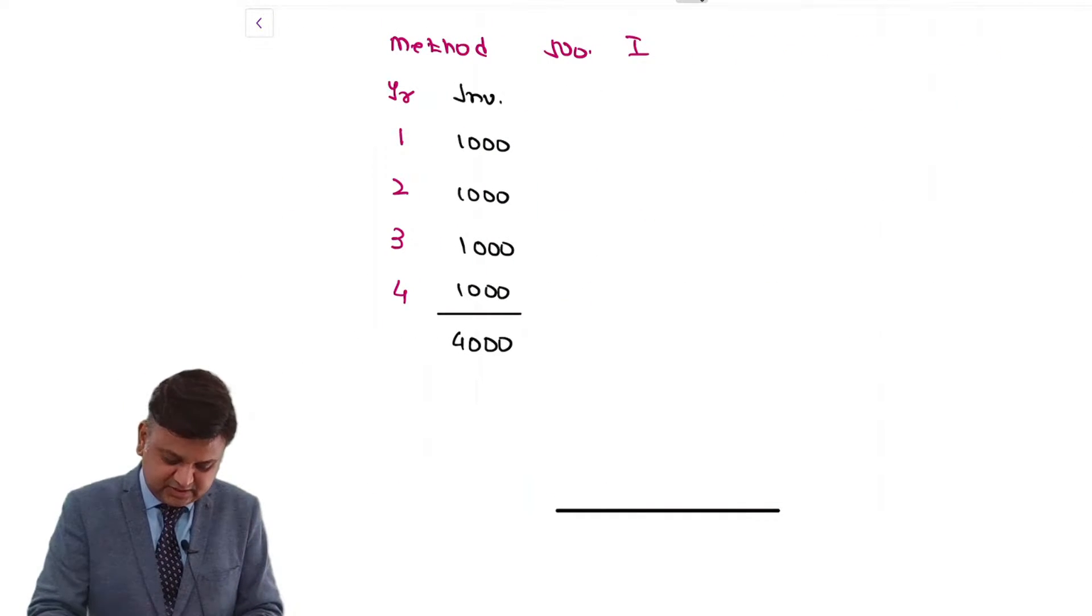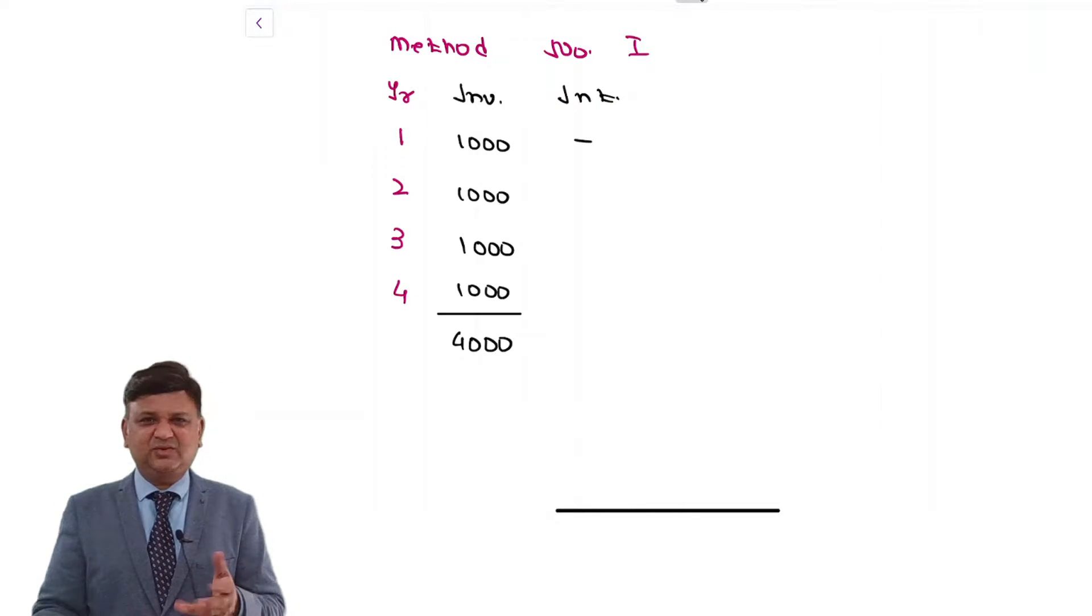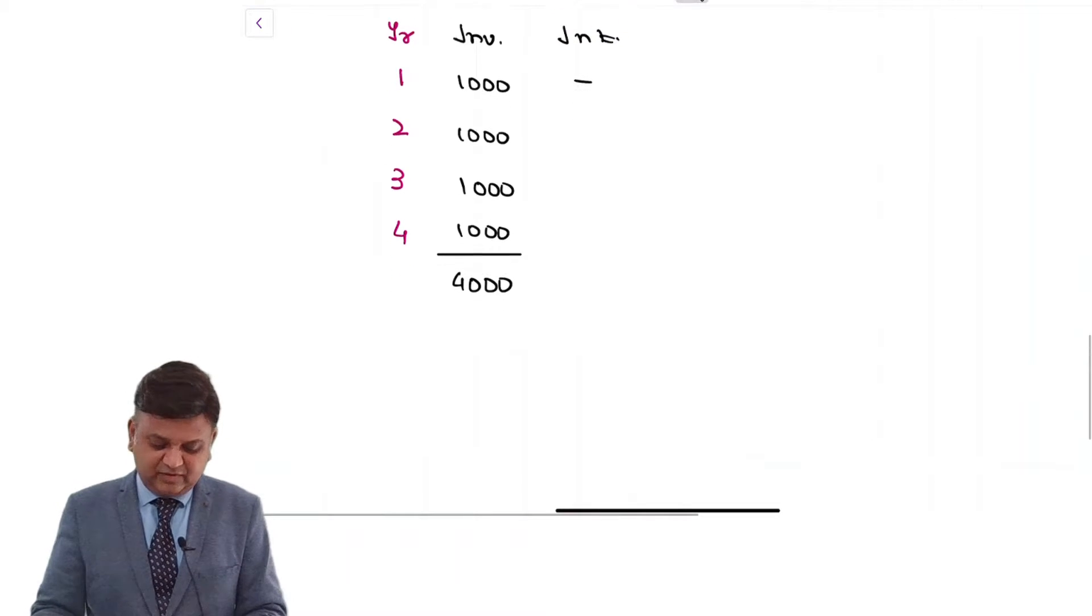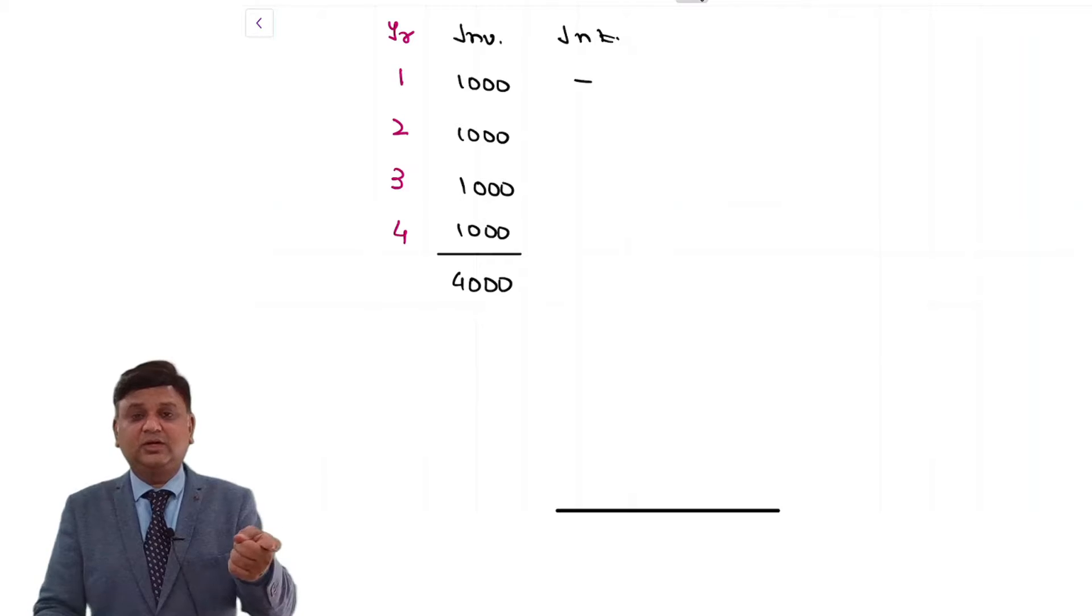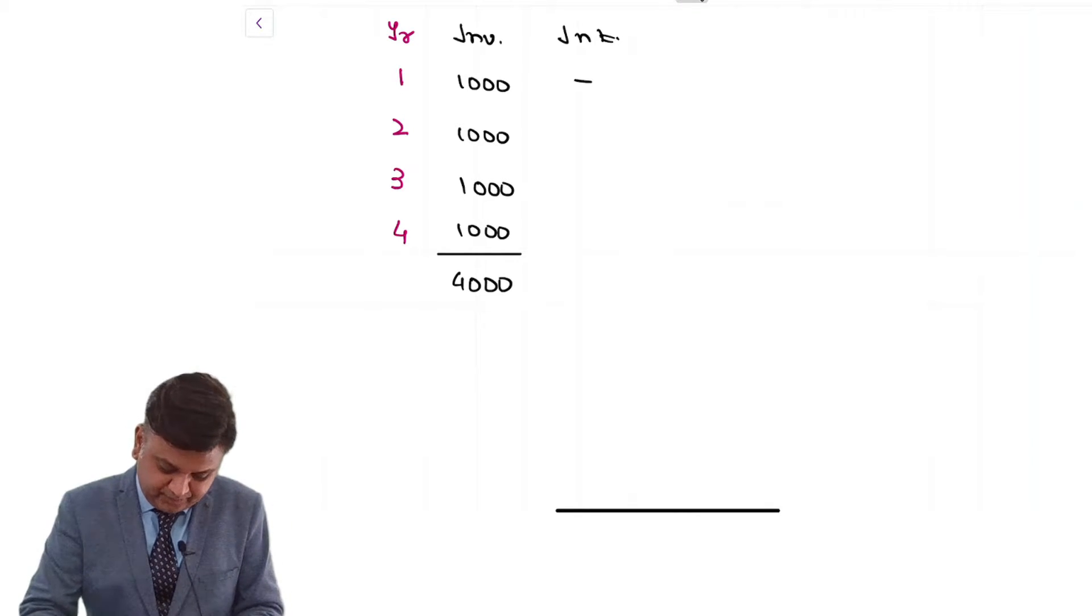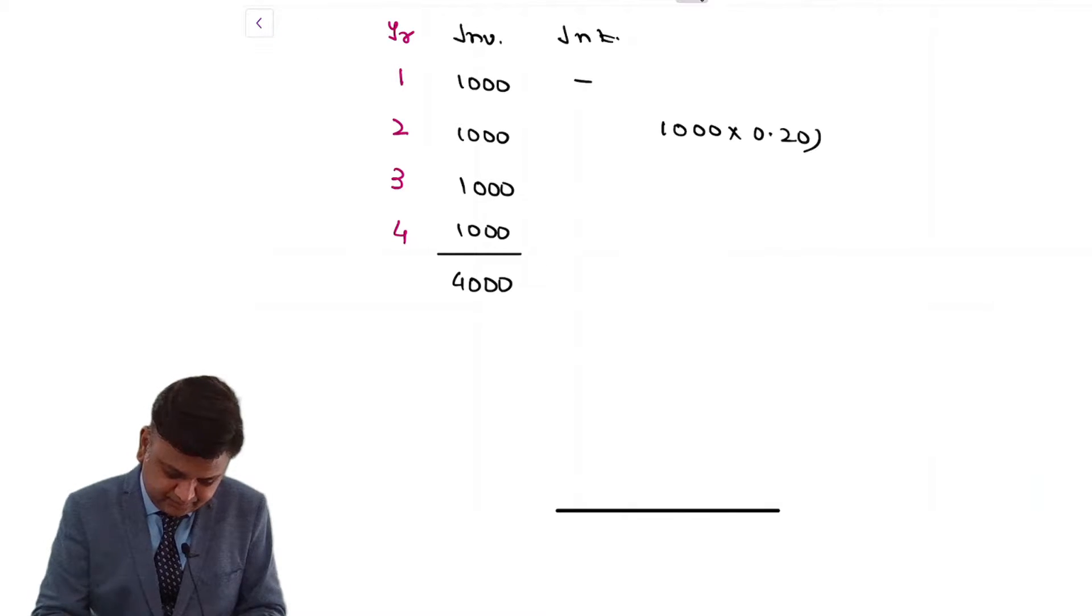So we write over here interest. In the 1st year, 0 interest. Why? Because the 1st investment is made at the end of year 1. Language of the question has no ambiguity. From end of year 1 to end of year 4. So it is 1,000 into 20 percentage. So in the 2nd year interest is 200.